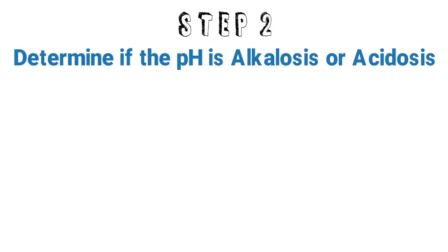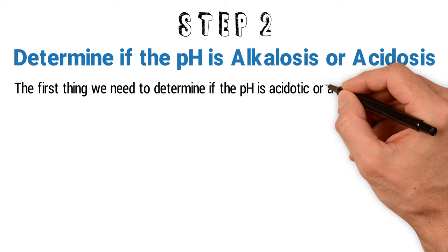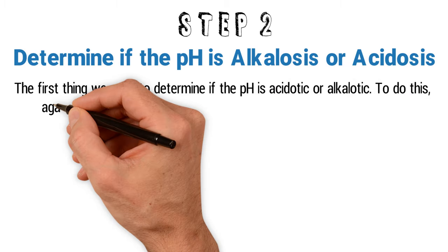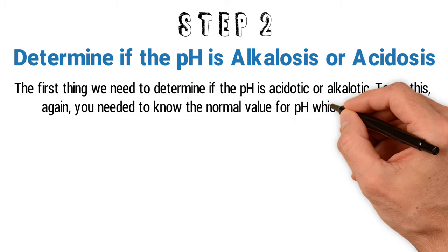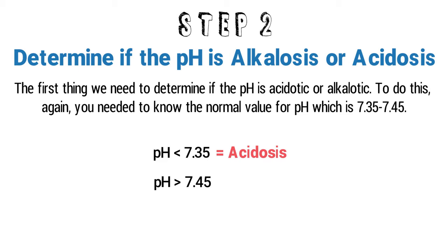Step 2: Look at the pH to determine if it is acidosis or alkalosis. The first thing we need to determine is if the pH is acidotic or alkalotic. Again, the normal value for pH is 7.35 to 7.45. If the pH is less than 7.35, it's acidosis. If the pH is greater than 7.45, it's alkalosis.